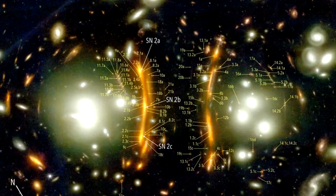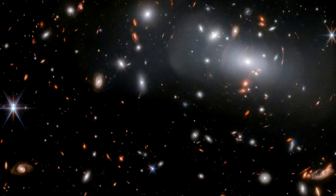The Type Ia supernova, named SNH0PE, was first discovered lurking in photographs captured by NASA's James Webb Space Telescope in March.